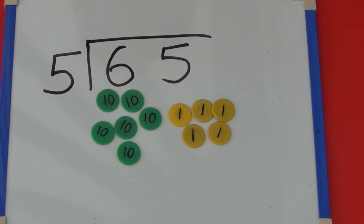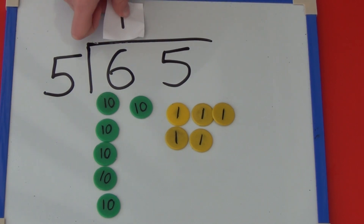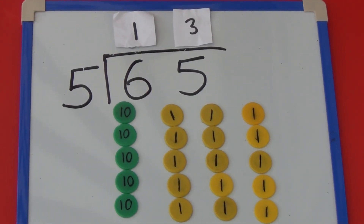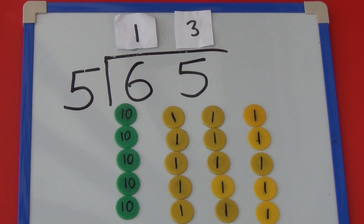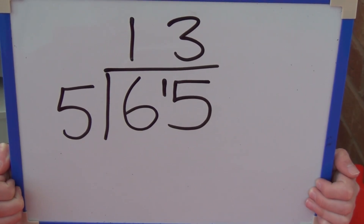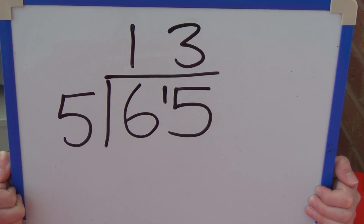For 65 we need 6 tens and 5 ones. As we are dividing by 5, we need to put the tens into groups of 5 and then the ones. The 6 tens divide into 1 group of 5 tens, but this time we have 1 ten left over. So we need to exchange the 10 for 10 ones and put them with the 5 ones. The 15 ones we have now divide into 3 groups of 5. So we have 1 group of 5 tens and 3 groups of 5 ones, which is 13. We can show this as a bus stop method without the counters: 65 divided by 5 equals 13.